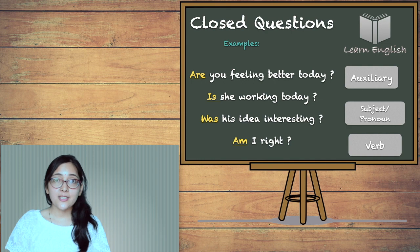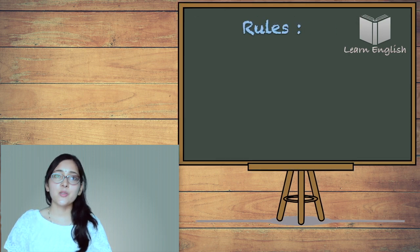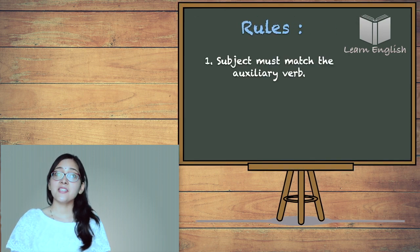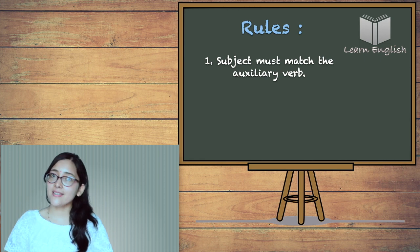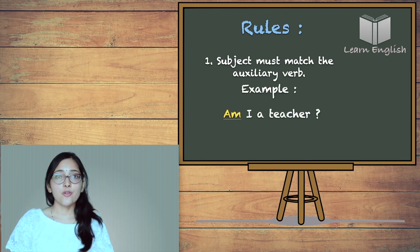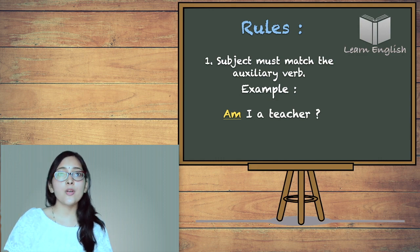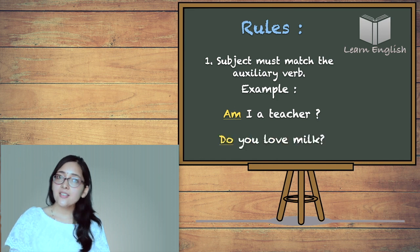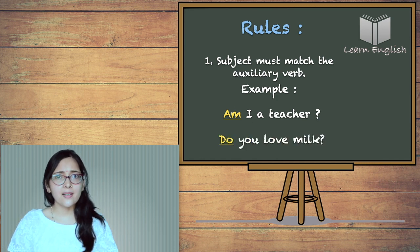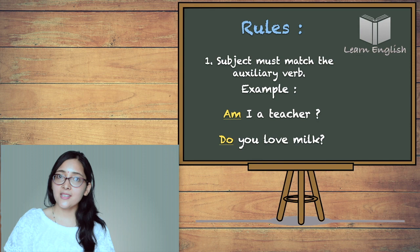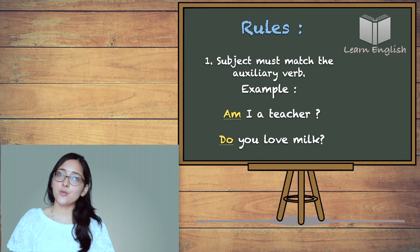Now there are two rules you must follow while making these questions. First is the subject must match the auxiliary verb. For example, I am a teacher. Now you use am with I. To form a question you would ask, am I a teacher? Right? Another example, do you love milk? So here do is used with the subject. To know more about the usage of do, doesn't, did, you can click on this link and go to our previous video.